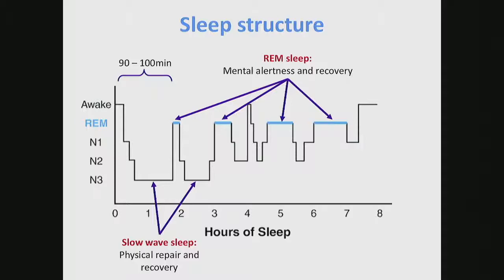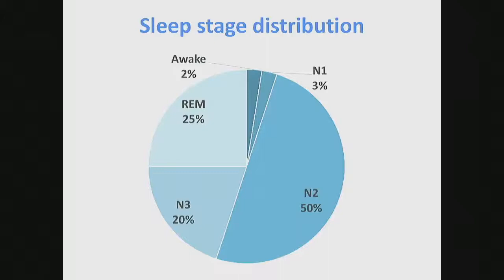If we lose REM sleep on any given night, we will have what we call REM rebound the following night - the body will pack it in, usually at the expense of slow wave sleep, to make sure we aren't chronically REM sleep deprived. On a normal night, about 50% of our time should be in stage two, only three to five percent in stage one - people who have poor sleep often spend 15 to 20% in this light stage. About 20% of the night in slow wave sleep, and around a quarter of our night should be spent in REM sleep. When we assess people's sleep, if those percentages don't match that, we can determine whether or not we should be concerned about lack of REM, lack of slow wave sleep, or too many awakenings.